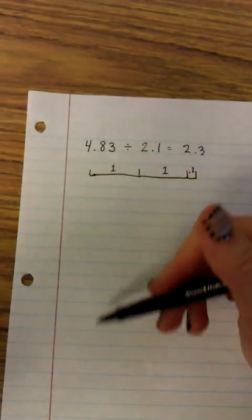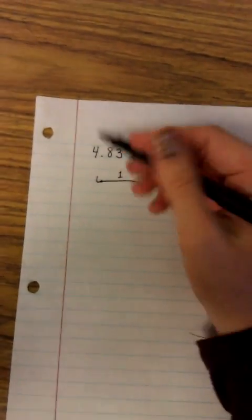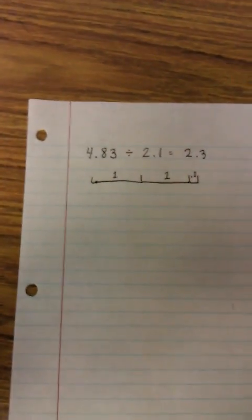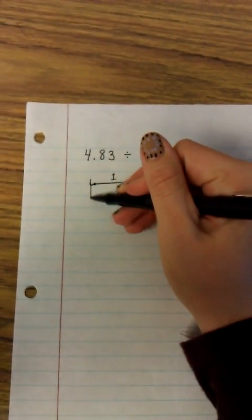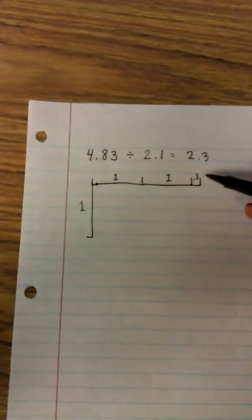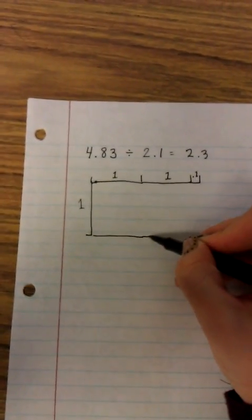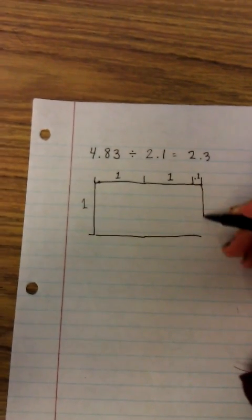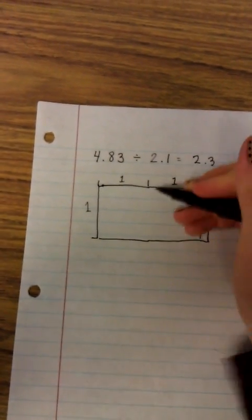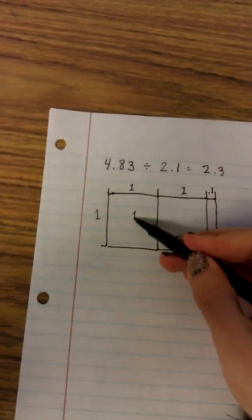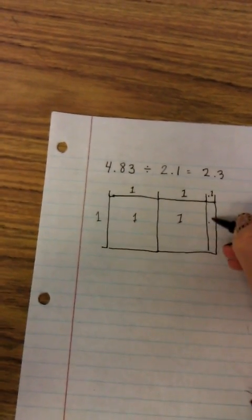So now I'm going to build my area model going down until I have 4.83. So I know I can do one whole because 2.1 times 1 equals 2.1 because one times anything is itself. So far I have 1, 2, and one tenth.